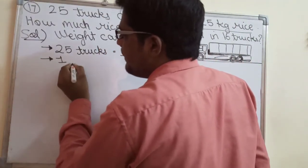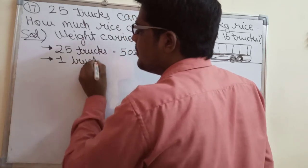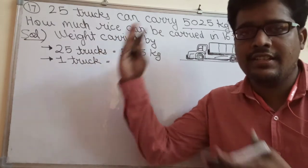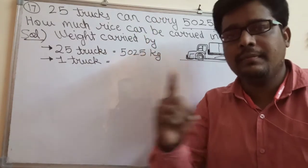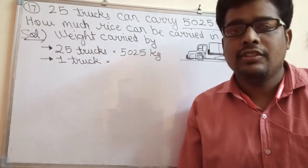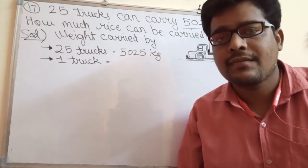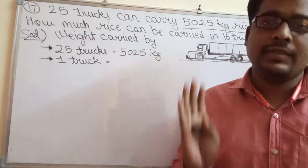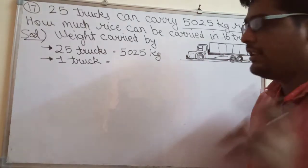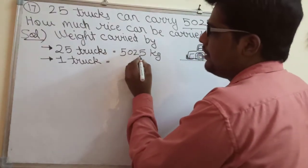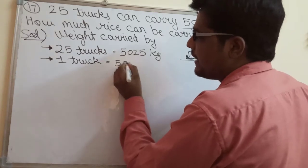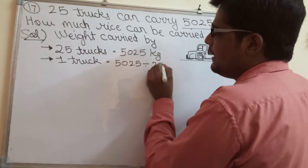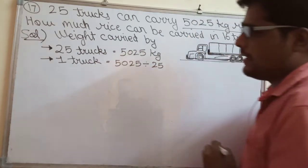Weight carried by one truck. Now we are given 25, that is a larger number of trucks, and we need to find it for one truck. So what will we do in this case? Divide. When a larger number is given and we need to find for one, we do division. We will divide 5025 by 25.